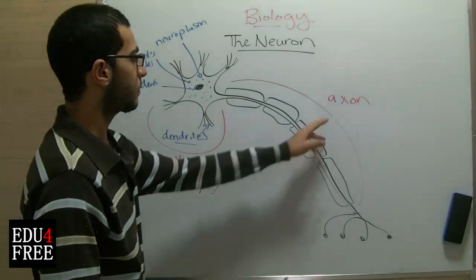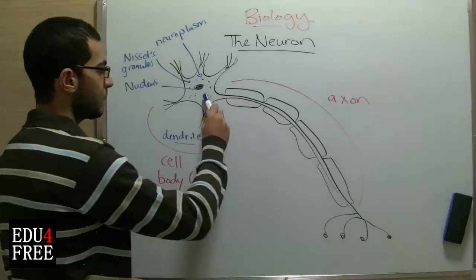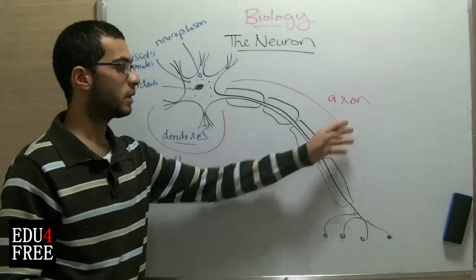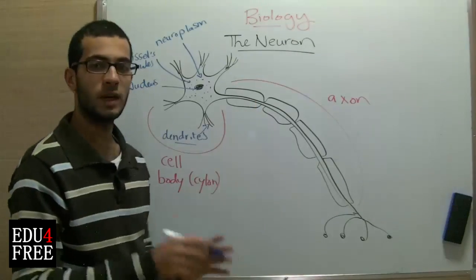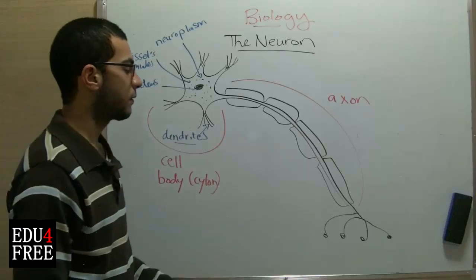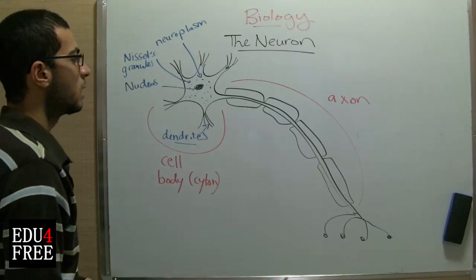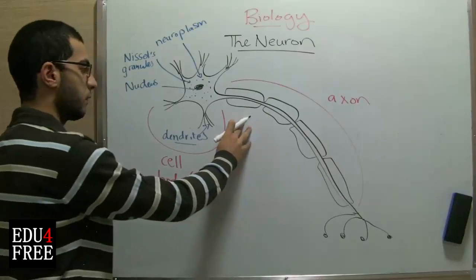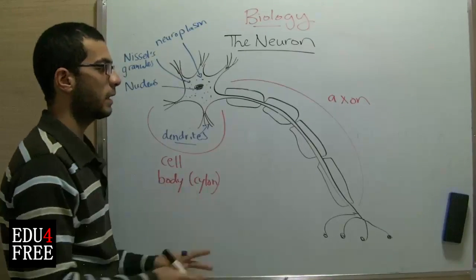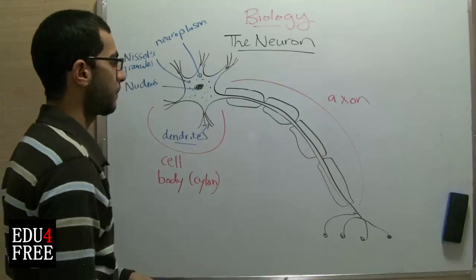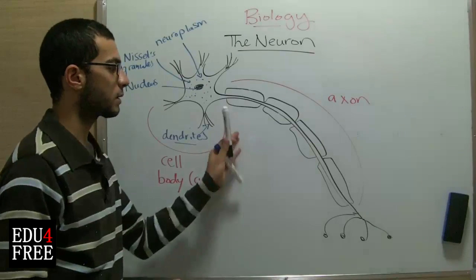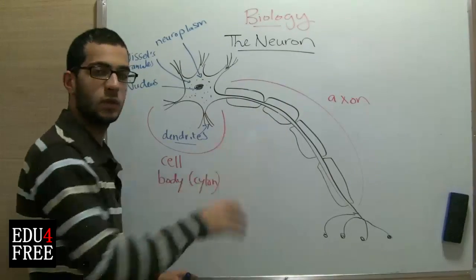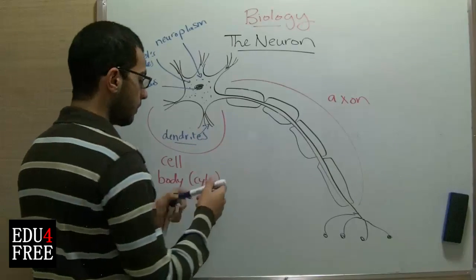Next, the axon. The axon is a cytoplasmic extension from the cell body, as you can see. The axon is called the nerve fiber, and this nerve fiber is used to transmit the nerve impulse from one nerve cell to another cell. The axon has a very important role in the transmission of nerve impulses. In order to enhance the capability of the axon in transmitting the nerve impulse, it must be insulated, so that the nerve impulse can only move through the axon and doesn't spread outside, which would decrease its speed. This insulator is called the myelin sheath.